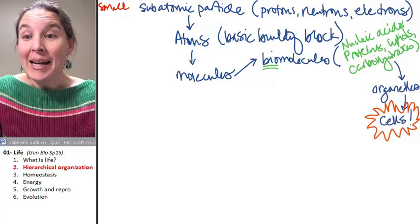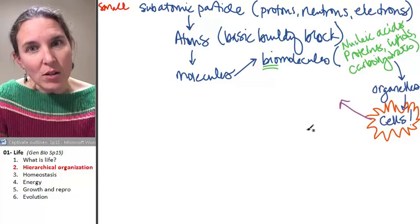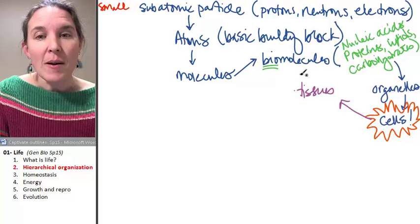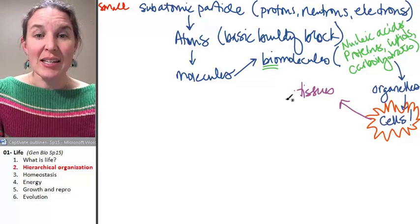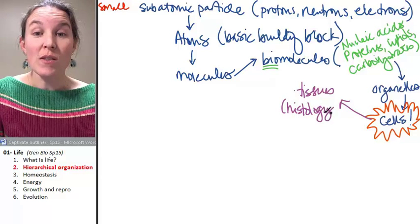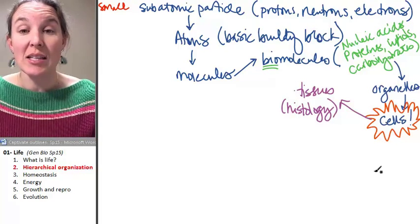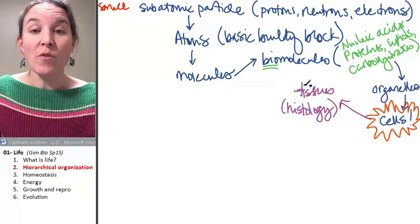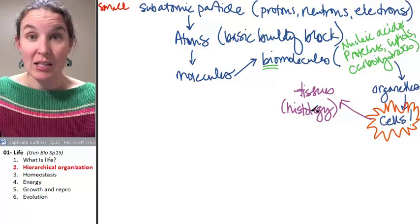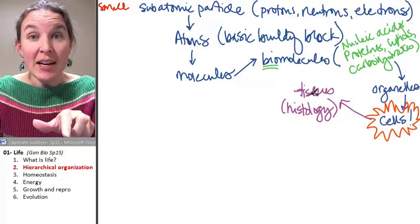Now you have cells. Now you have living things. We can combine these living things. We can combine these cells together, and if you get a group of cells working together for a common function, then we get tissues. The study of tissues is histology. We will use the microscopes to look at some tissues in this class. It's a group of cells that are working together for a common function.